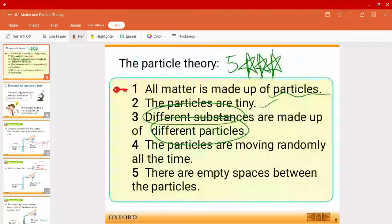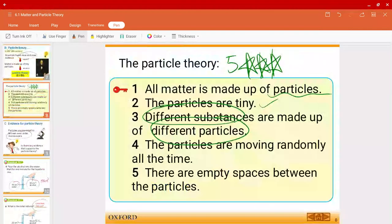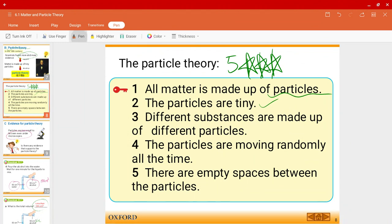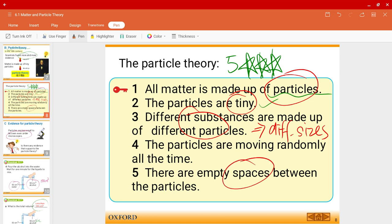So, let me go back to the particle theory, the five statements that we saw. Let me rub this out very quickly. Just now, as I showed you, all matter is made up of particles. Particles are usually very tiny. Different substances are made up of different particles. And I showed, and I told you, they also have different sizes. Okay. And there are also spaces between different particles.